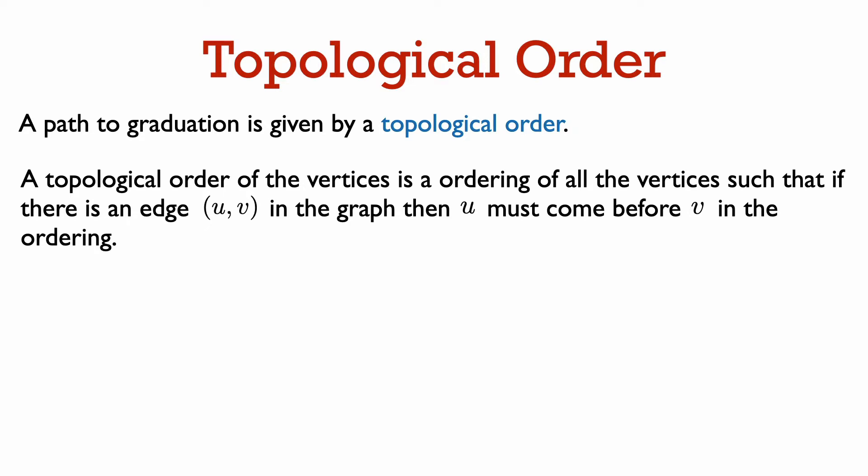Such an ordering is known as a topological order. A topological order of the vertices is an ordering of all the vertices. So you want to say this vertex is first, that one is second, this other one is third, etc. And if there are n vertices, you want to assign them the numbers 1 to n, using each number once,